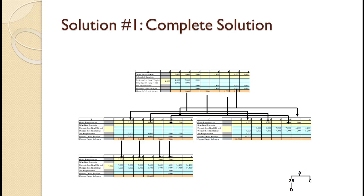The screen shows the completed solution with lines showing all the flows of data between the various planning grids. First, numbers always flow out of the orange planned order release area into the yellow gross requirements area. Second, numbers always flow down the bill of material beginning at Level 0, flowing into Level 1, then Level 2, and so on. Third, the resulting diagram of the planning grids looks just like the bill of material for the item. These completed diagrams are difficult to see on the screen, so I will not be showing them for the remaining examples.